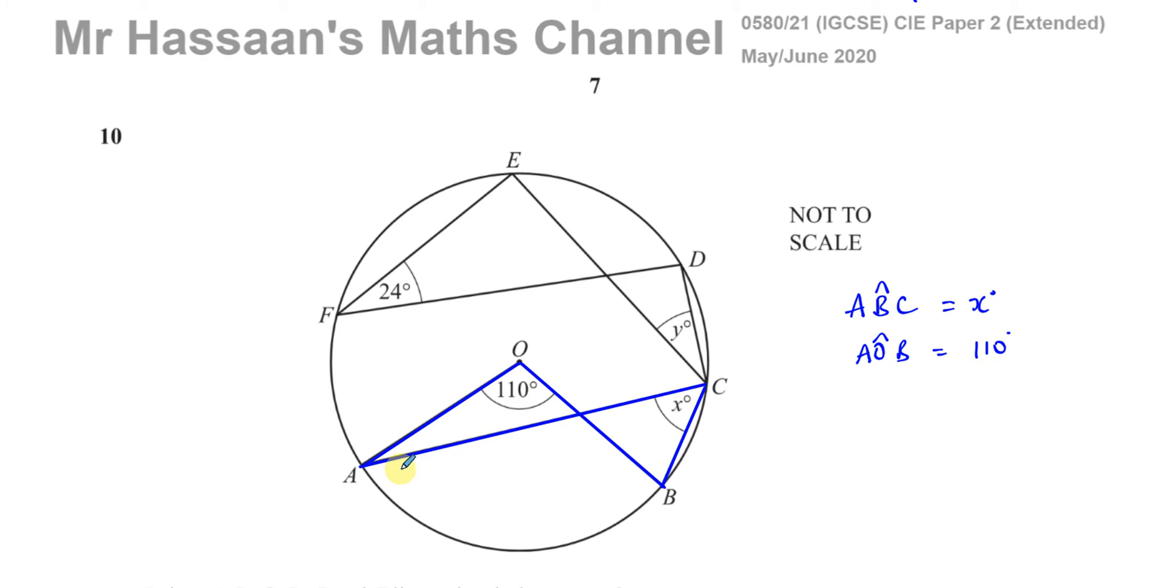Now, one of the important properties that we know about angles in circles are angles that stand on the same arc, stand on the same two points on the circumference of the circle. Like ACB comes from A, B. And one of them is at the center, like AOB. It's at the center itself.